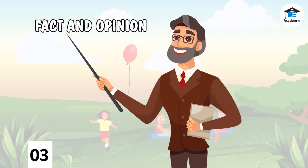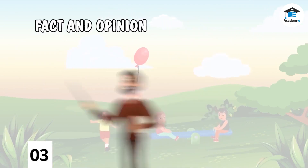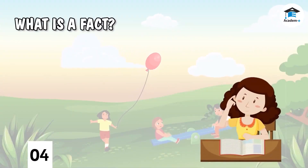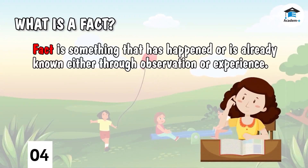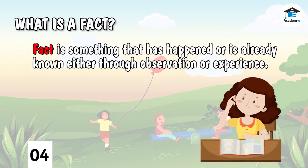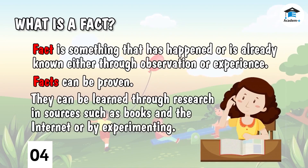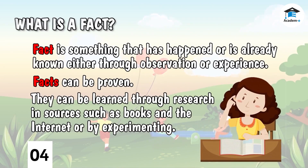First, let's discuss what a fact is. Fact is something that has happened or is already known either through observation or experience. Facts can be proven. They can be learned through research and sources such as books and the internet, or by experimenting.